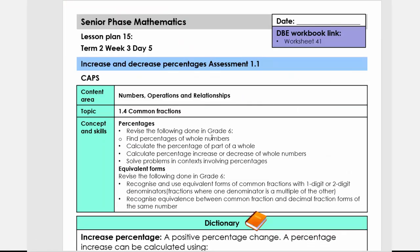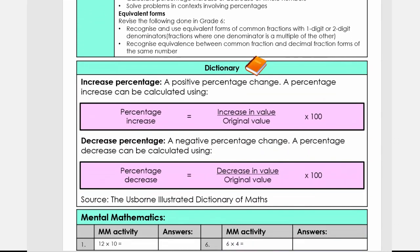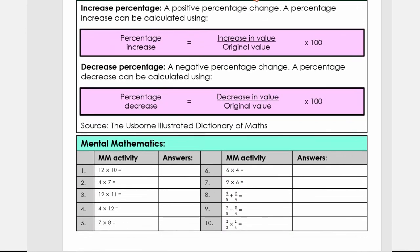When we come back, this is the link to the CAPS. I'm going to scroll down and we're going to look at the dictionary. You're going to pause at the dictionary, and we're going to look at what increased percentage and decreased percentage means.